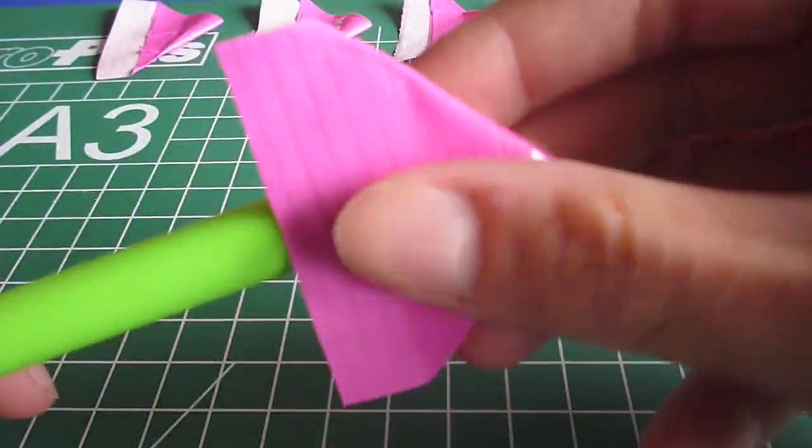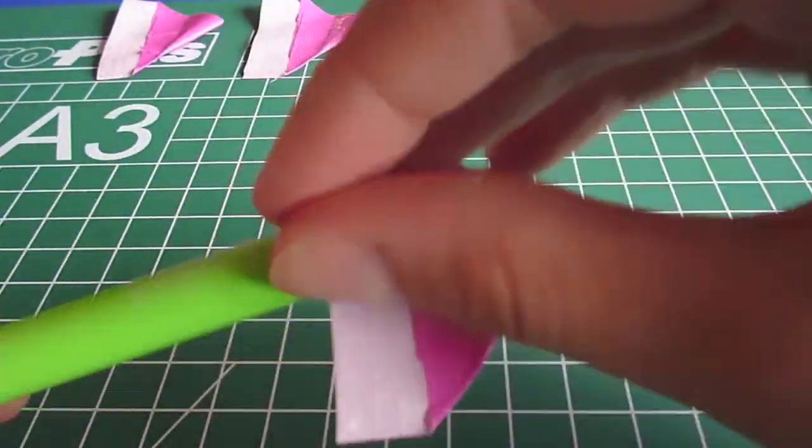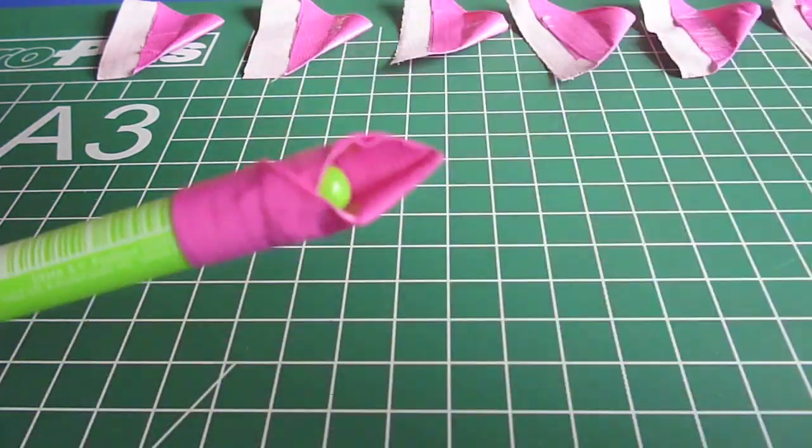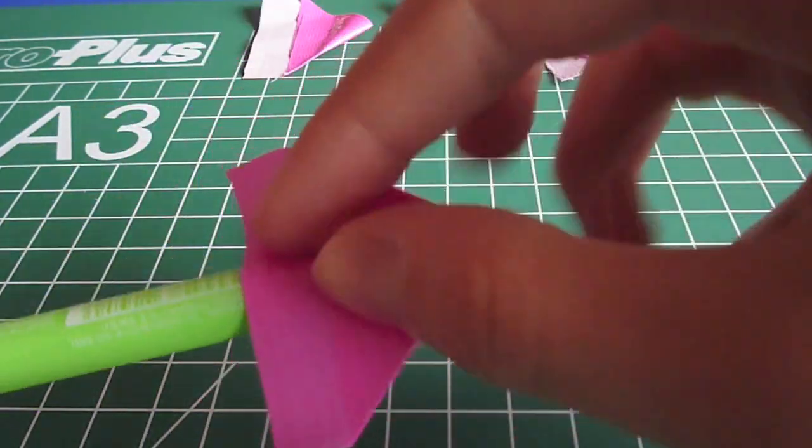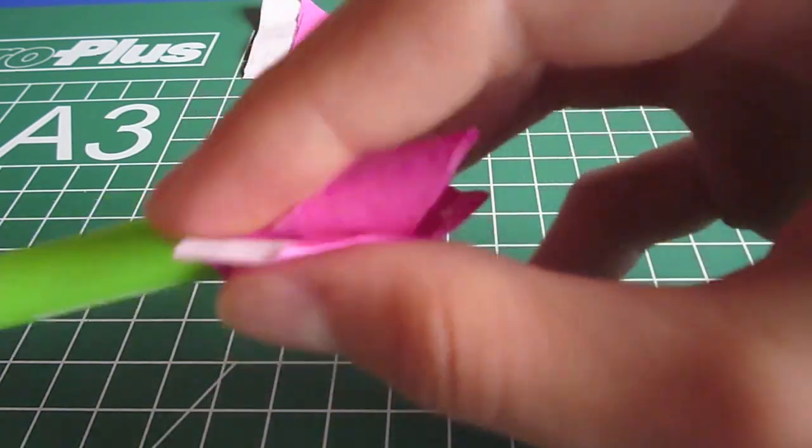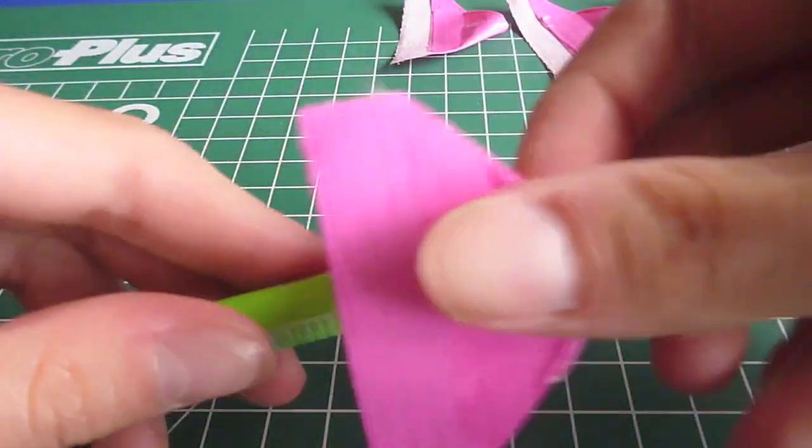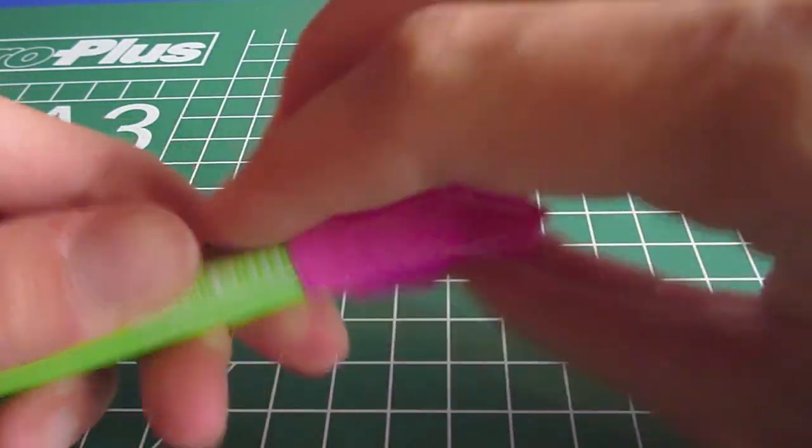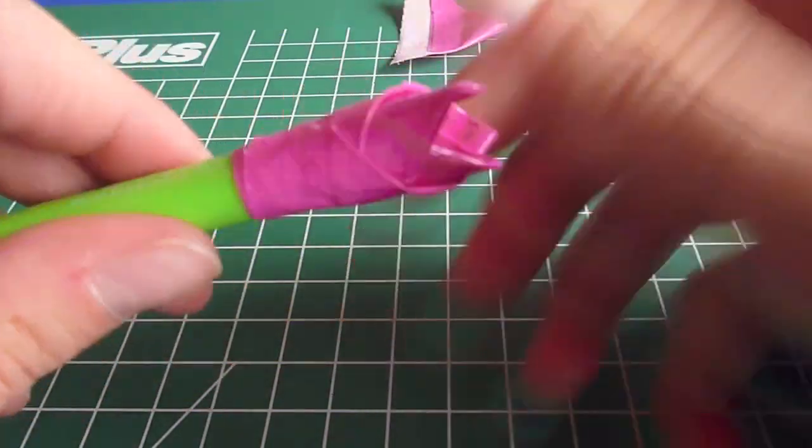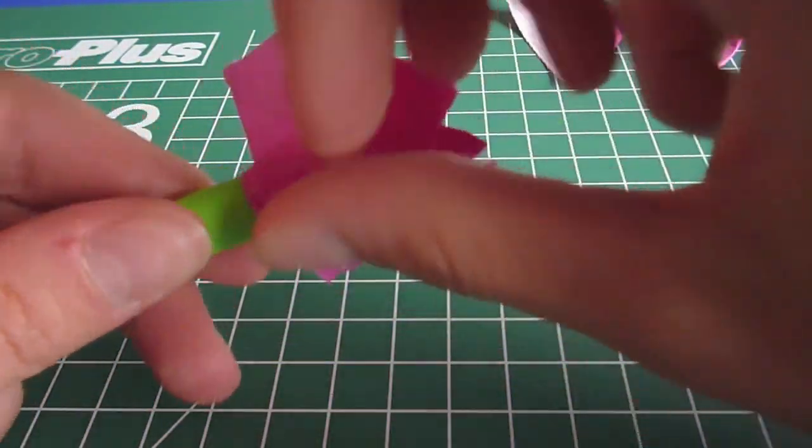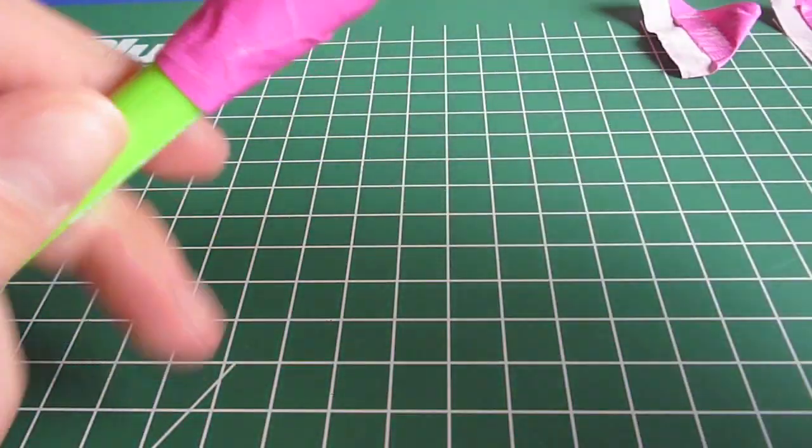Start with sticking one to the end of the pen. Then add the other one at the opposite side. Now just go on like that and fill in the space between.